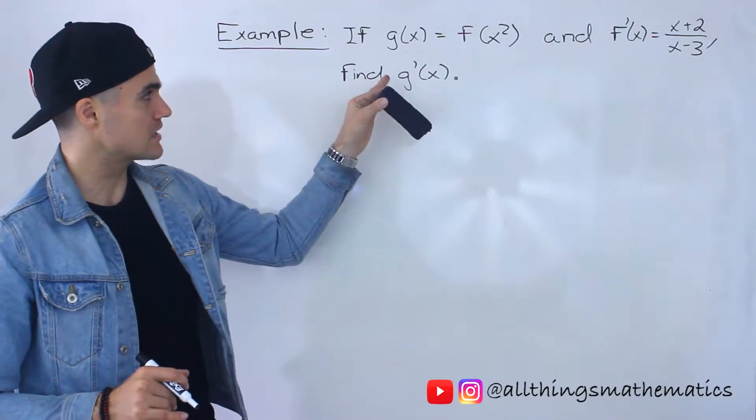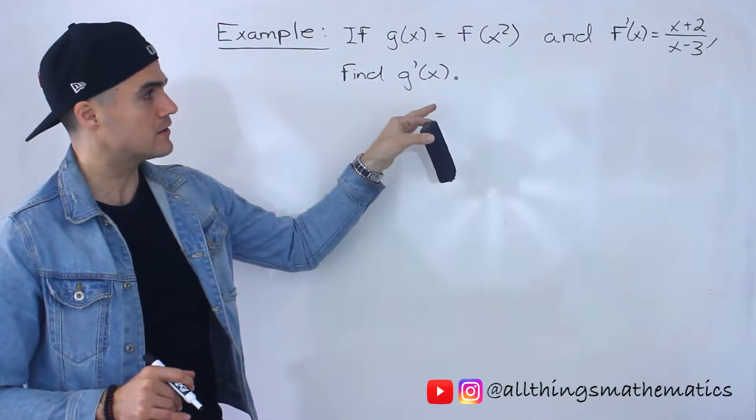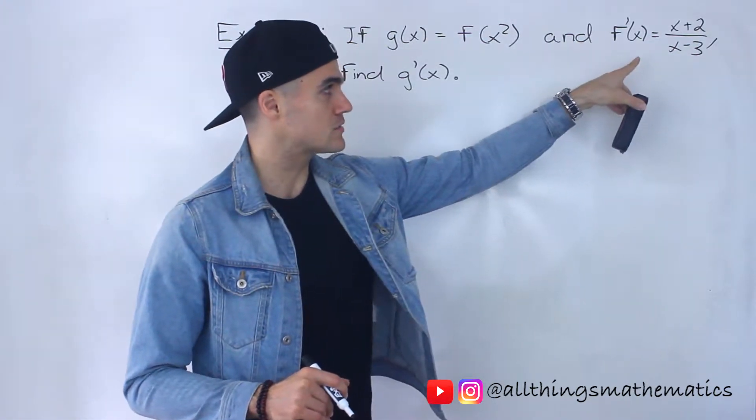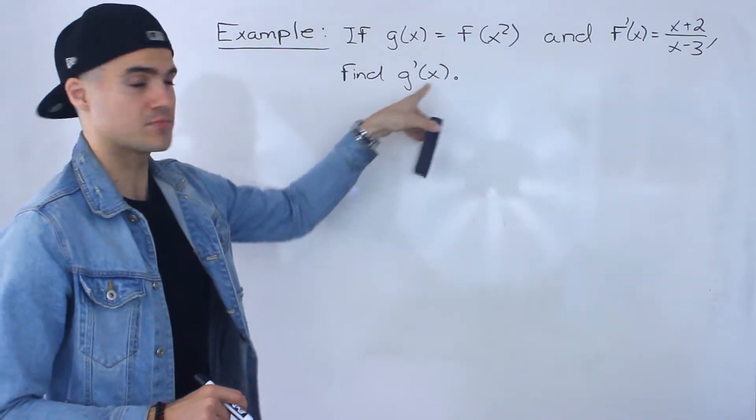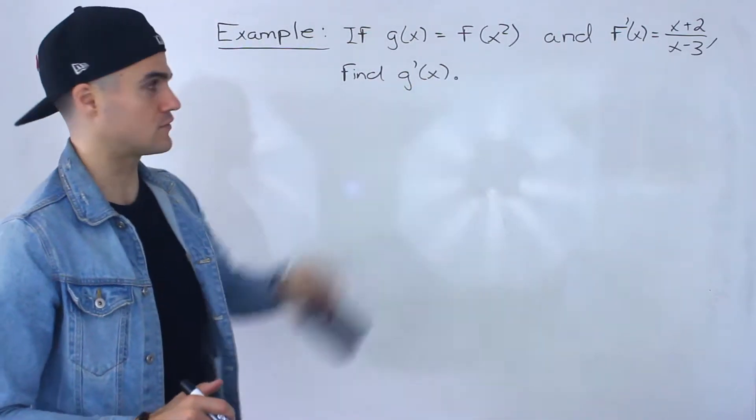So if g of x equals f of x squared and f prime of x is equal to x plus 2 over x minus 3, we got to find what g prime of x is going to be, an expression for g prime of x.